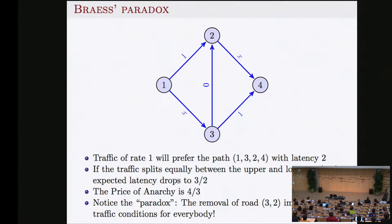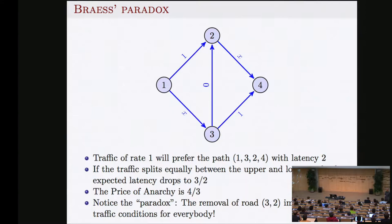If instead somebody split the traffic to top and lower paths, the upper path would have latency one plus one-half, giving three-halves. The ratio between the optimal solution and the selfish solution is again four-thirds. This network is infamous because if we destroy this road — close it — traffic improves. This happens in real life: in Stuttgart they built a new road and traffic became worse. For selfish drivers, latency is not monotone.